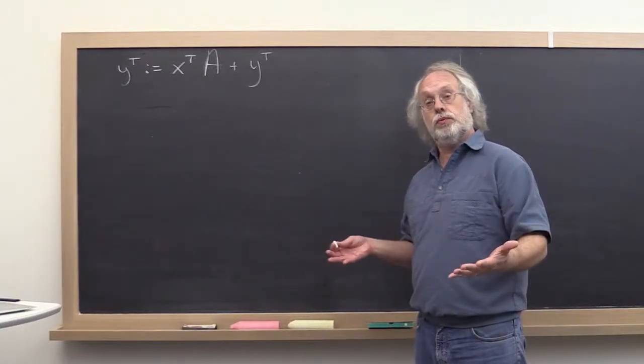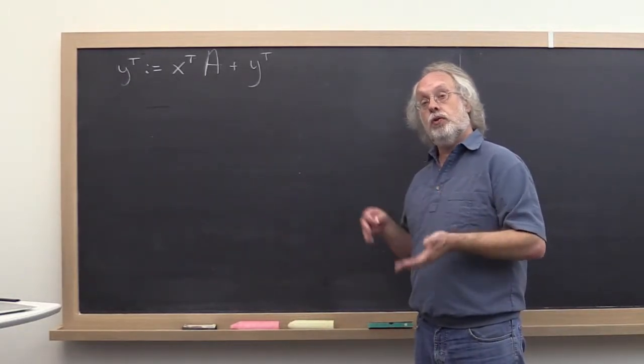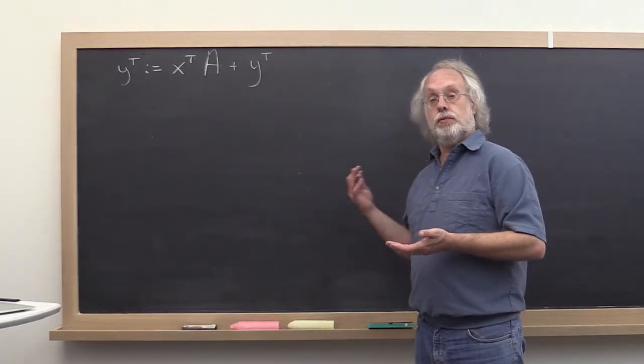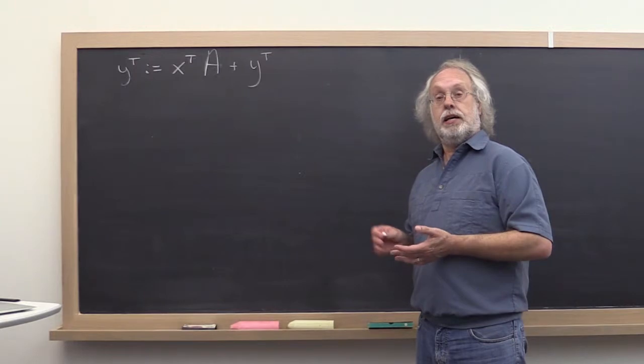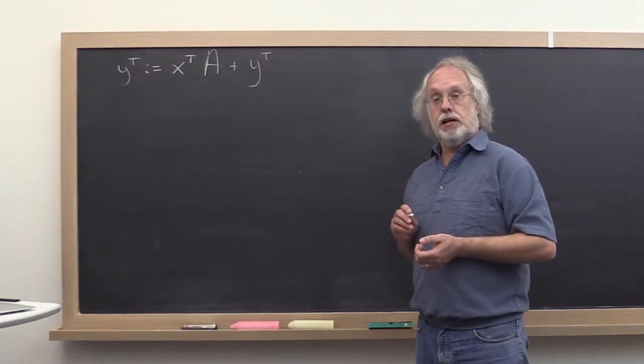Okay, so in the last video we looked at how a row times a matrix plus a row could be implemented, could be expressed by partitioning matrix A by columns.